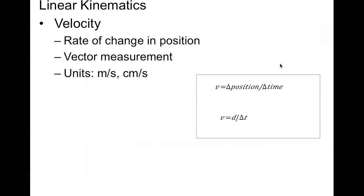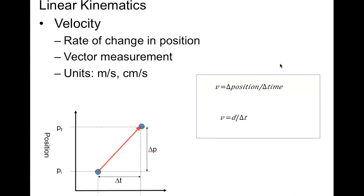Velocity is the rate of change in position. It is also a vector, meaning it has direction and magnitude. Units are centimeters per second or meters per second. The equation is ΔP/ΔT — change in position over time — and remember, change in position is also displacement. Velocity is the slope of this line: a greater change in position over a shorter time gives higher velocity, while a less steep slope means lower velocity.